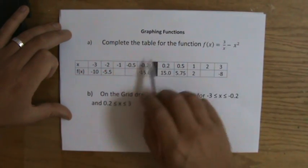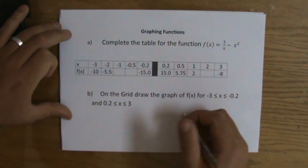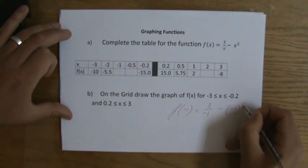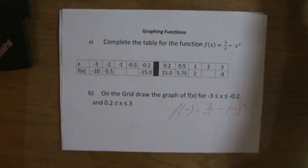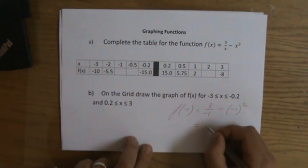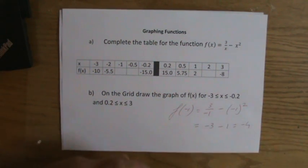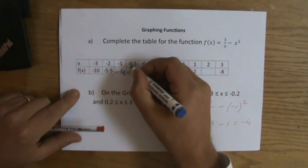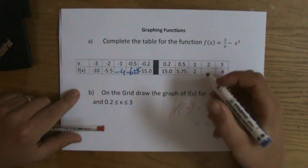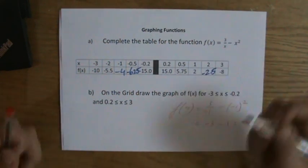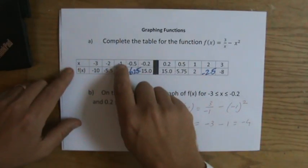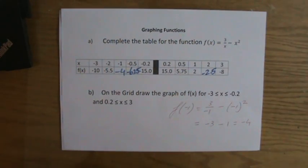I put x = -1 into my calculator: 3 over minus 1, minus minus 1 squared. Please be careful with those brackets — minus 3 minus 1 gives minus 4. So I put minus 4 there, that is the point (−1, −4). If I do the same for x = −0.5, and do that properly, I get minus 6.25. And if I put in x = 2, I'm going to get minus 2.5. So I have already earned three points just by substituting those x-values into my function and getting a y-value.